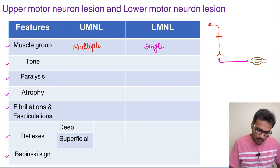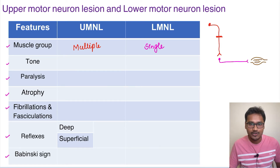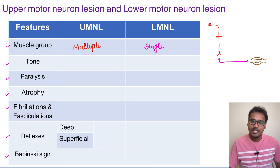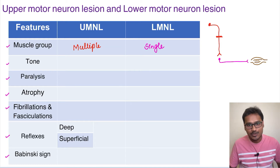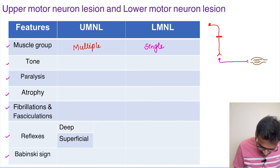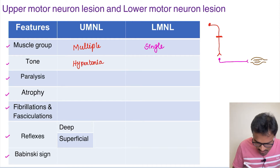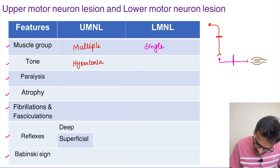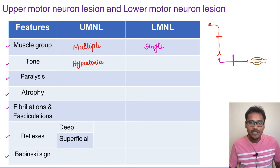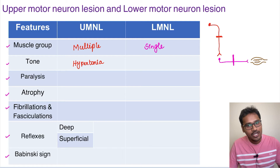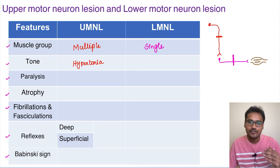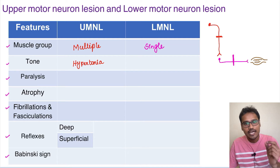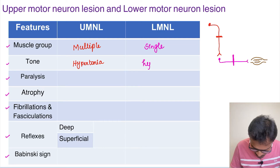Coming to tone — the upper motor neuron was keeping the lower motor neuron under control. When there is no upper motor neuron controlling it, the lower motor neuron will keep on contracting and increasing the tone of the muscle. So the tone becomes hypertonia in case of upper motor neuron lesion. In lower motor neuron lesion, when the muscle is not getting any nerve supply, the tone of the muscle is going to drop. It is called as hypotonia.